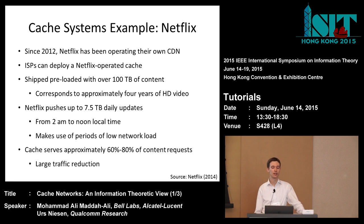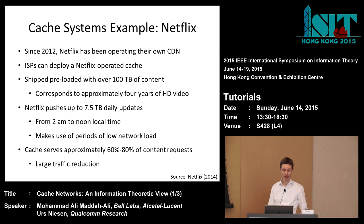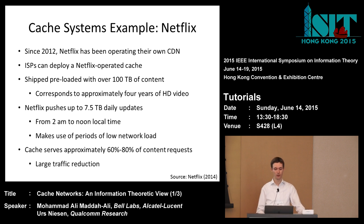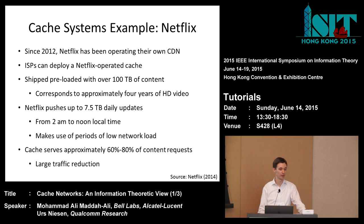ISPs can deploy a Netflix-operated cache into their network. Netflix ships them a server preloaded with over 100 terabytes of content — approximately four years of HD video, which is an amazing number. Every night, Netflix pushes up to 7.5 terabytes of daily updates onto the server. The server sits in the ISP's network but is operated and controlled by Netflix. This pushing of updates is done from 2am to noon local time.